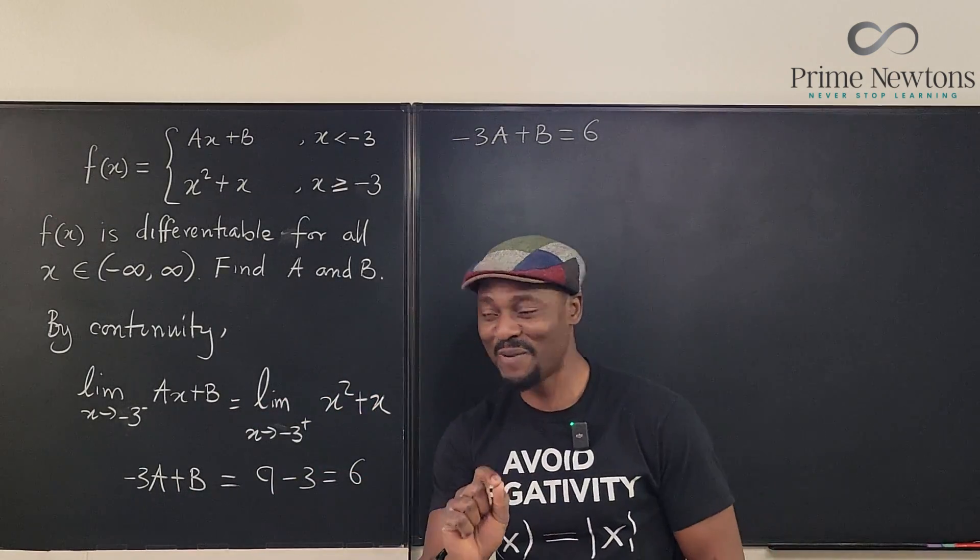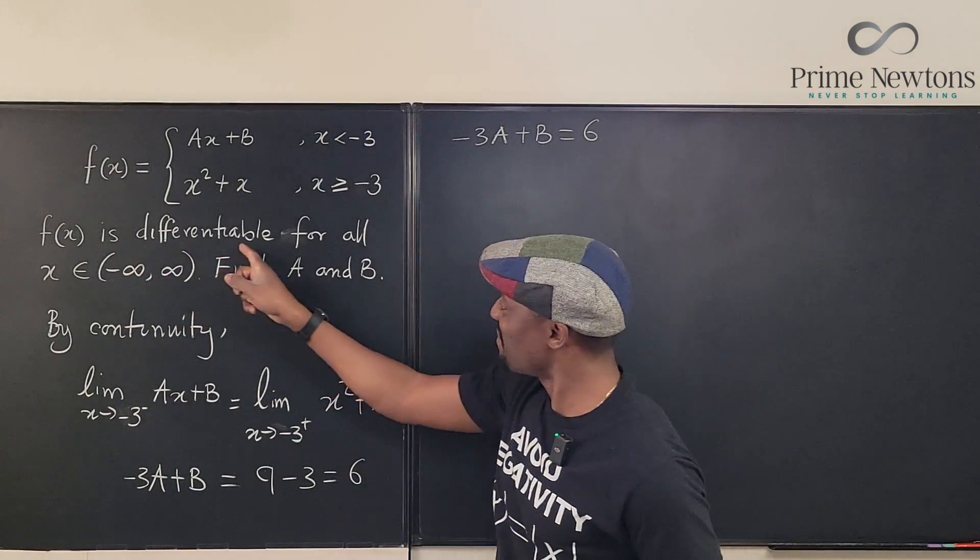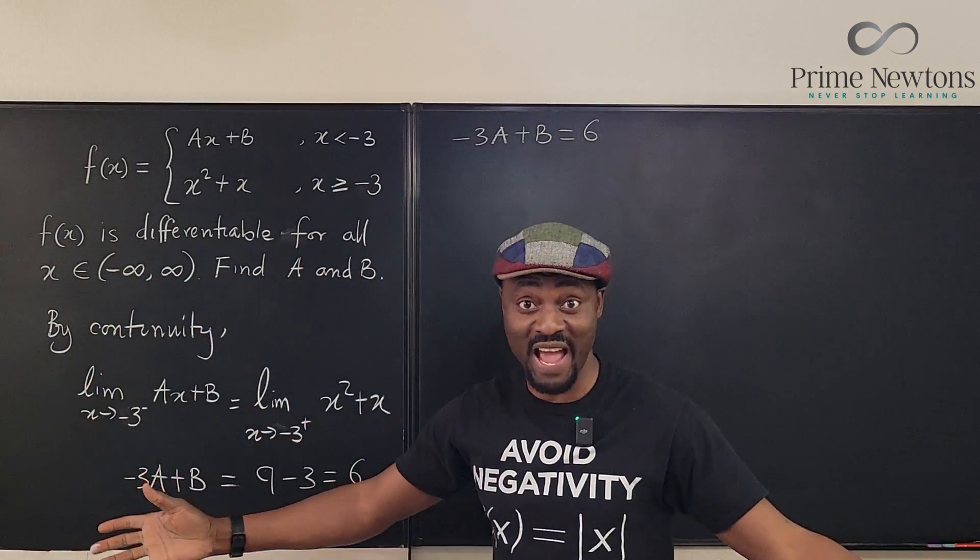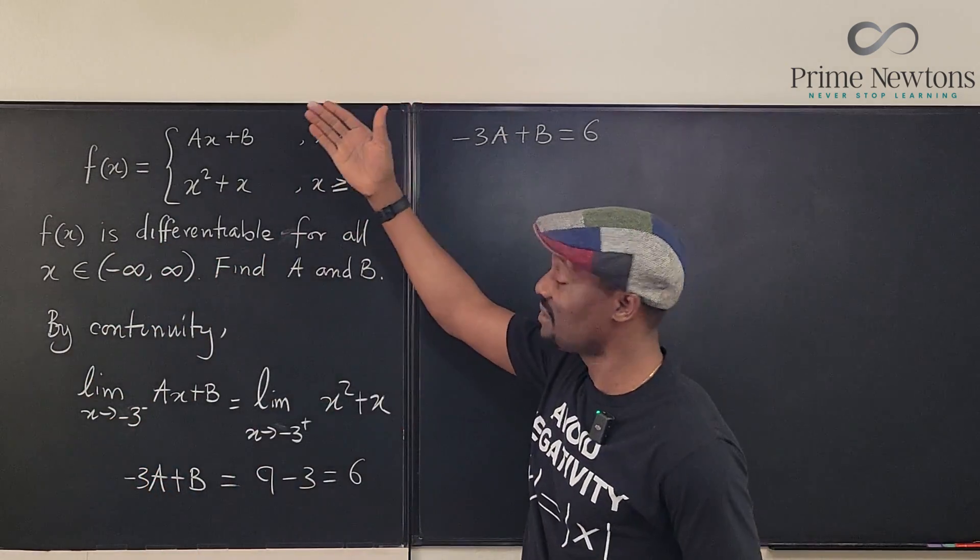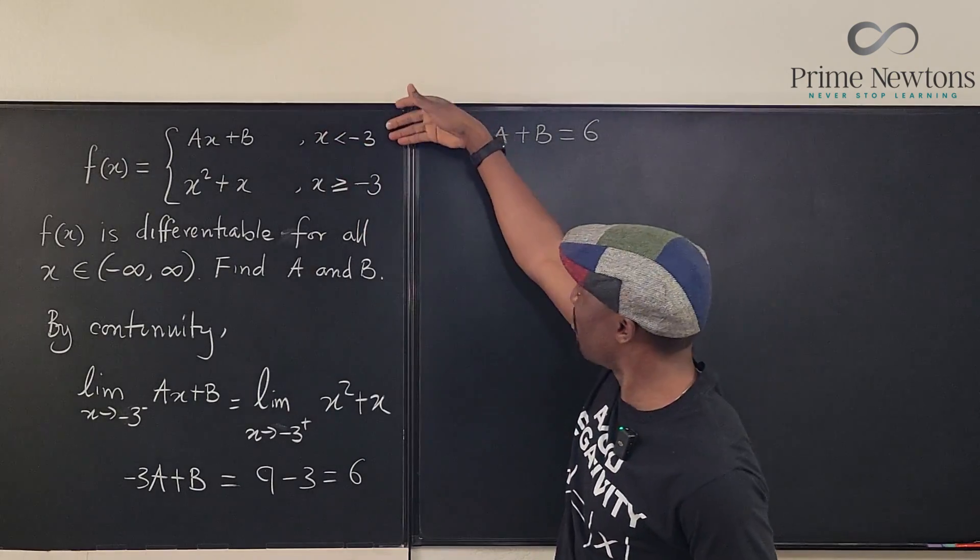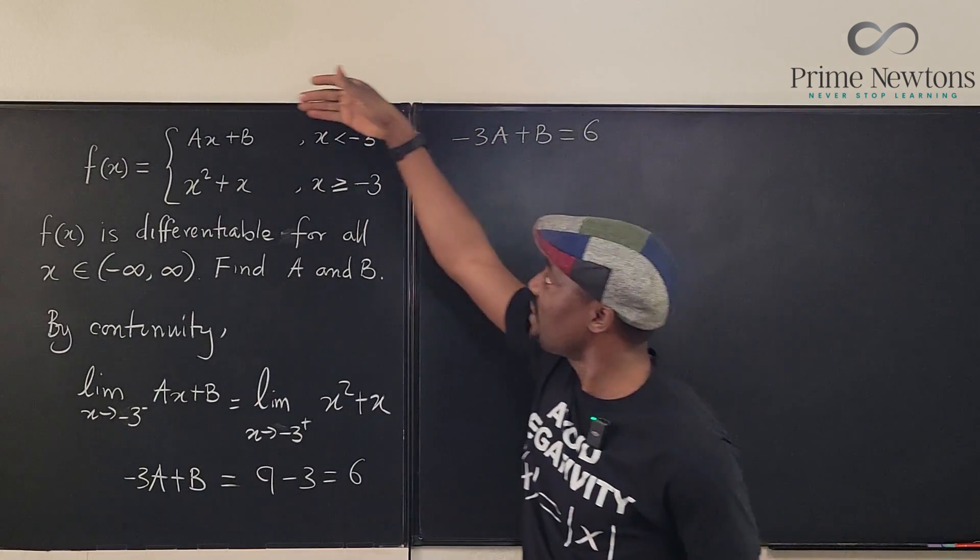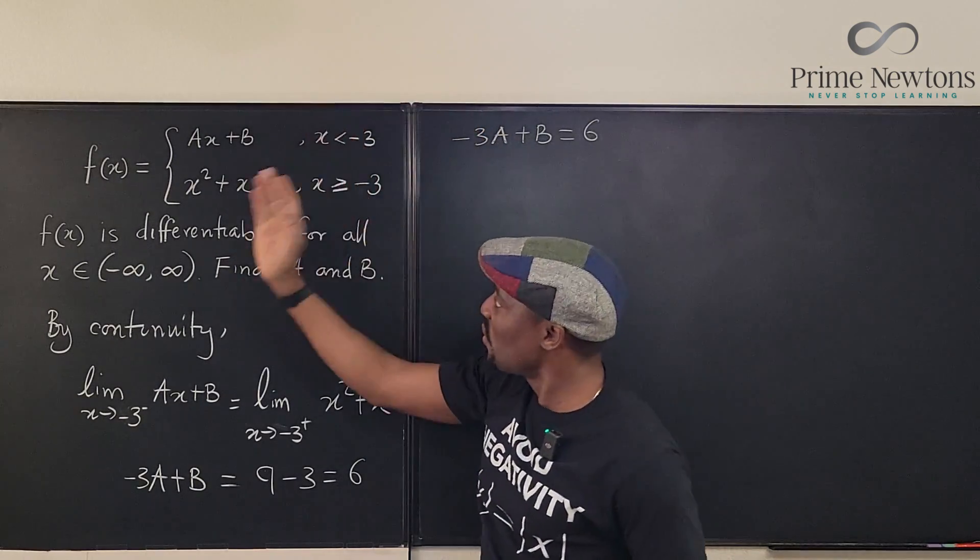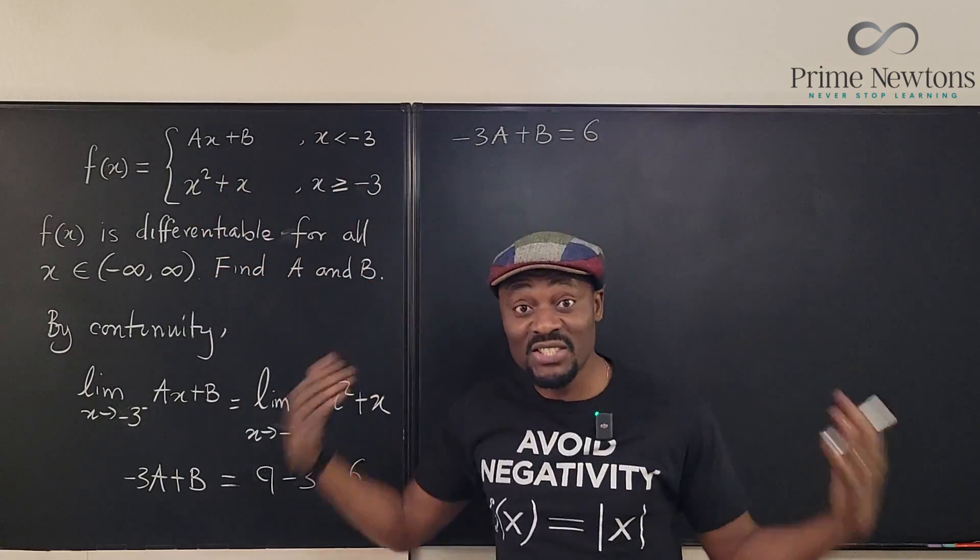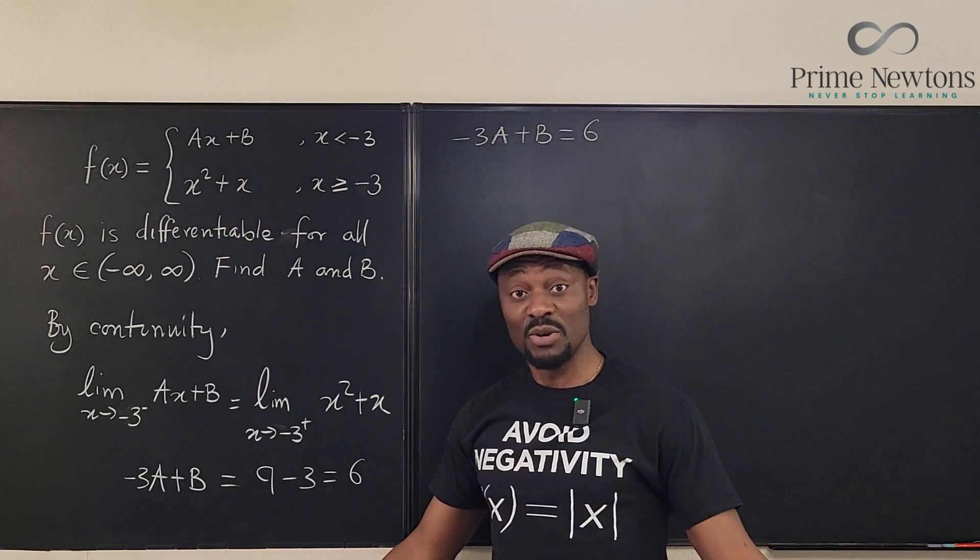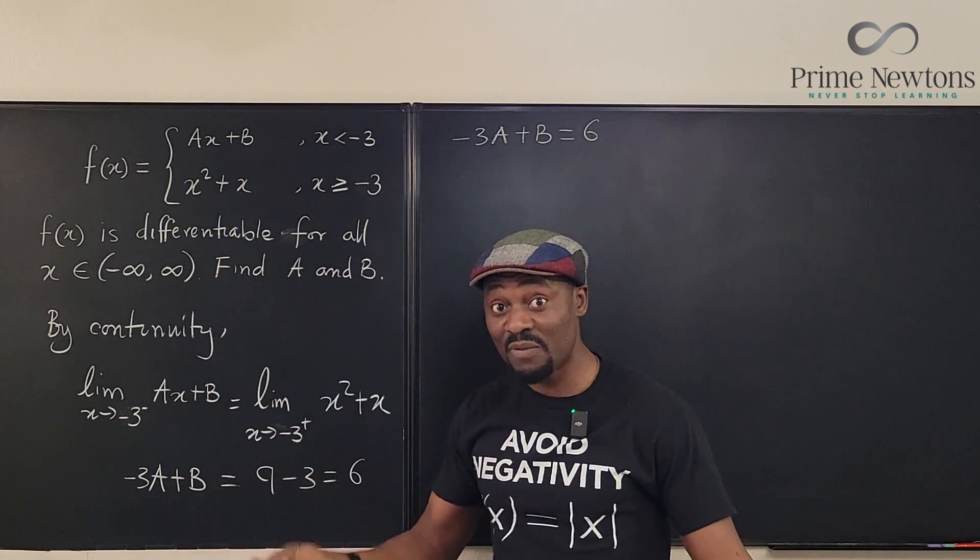We also know because the function is differentiable for all values of x, it means you can differentiate this function at this point, at the point negative 3. Whether you use this function, or you use this function, you will get the same derivative. The value of the derivative, or the same slope, I should say,